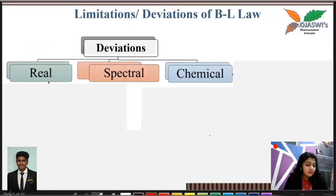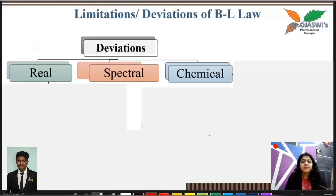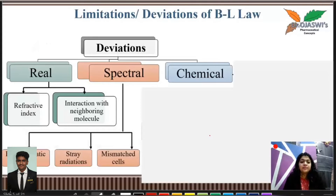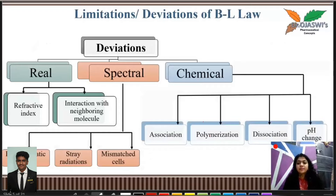Limitations or deviations of Beer-Lambert's law can be classified into three categories: real deviations, spectral or instrumental deviations, and chemical deviations. Real deviations are further subclassified into refractive index and interaction with neighboring molecules. Spectral deviations include polychromatic light, stray radiations, and mismatched cells or cuvettes. Chemical deviations include association, polymerization, dissociation, and pH change.